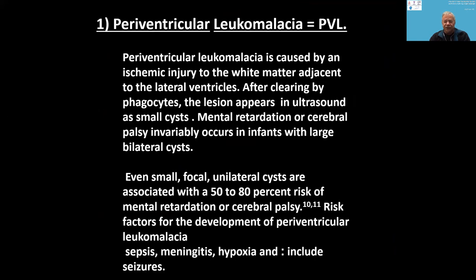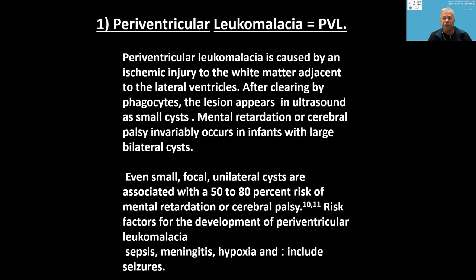Periventricular leukomalacia (PVL) is the first group of cysts I want to speak about. PVL is caused by an ischemic injury to the white matter adjacent to the lateral ventricles. After cleaning by phagocytes, the lesions appear on ultrasound as small cysts.